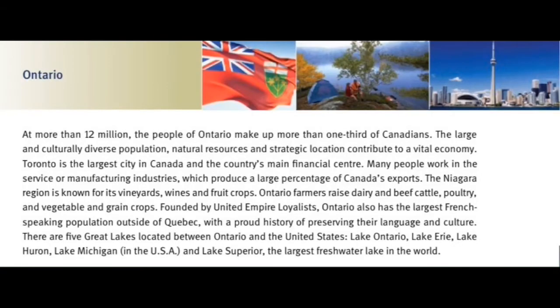Ontario. At more than 12 million, the people of Ontario make up more than one-third of Canadians. The large and culturally diverse population, natural resources and strategic location contribute to a vital economy. Toronto is the largest city in Canada and the country's main financial centre. Many people work in the service or manufacturing industries, which produce a large percentage of Canada's exports. The Niagara region is known for its vineyards, wines and fruit crops. Ontario farmers raise dairy and beef cattle, poultry and vegetable and grain crops. Founded by United Empire Loyalists, Ontario also has the largest French-speaking population outside of Quebec, with a proud history of preserving their language and culture.